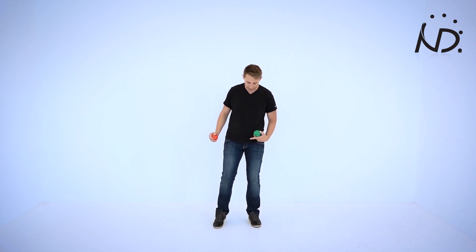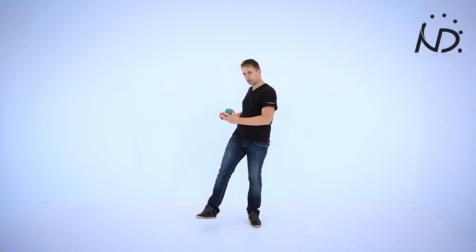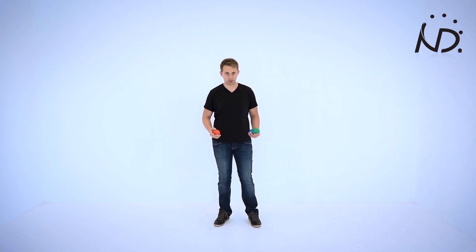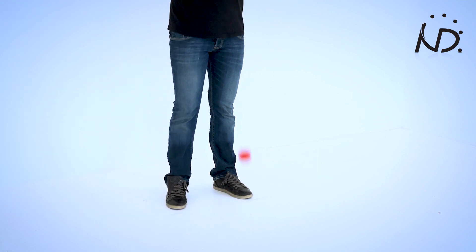So what you want to do for the under the leg throw: you lift your leg up just a little bit and turn your body just a little bit. You throw it slightly from behind to the front, only a little bit. So from the front it looks like this.